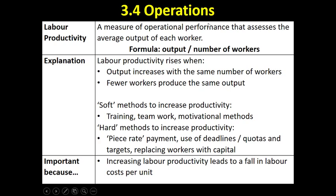Or, if we can get the same output with fewer workers then that would be a great result as well. So if I can sell a thousand cups of coffee but do that with only five workers, this time a thousand divided by five means each worker is responsible for two hundred cups of coffee. So the labour productivity has also risen even though output hasn't increased — I've just reduced the number of workers and my remaining ones are working a lot harder.